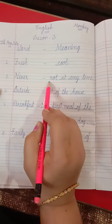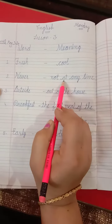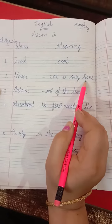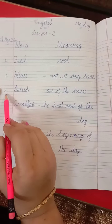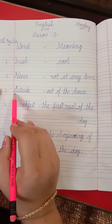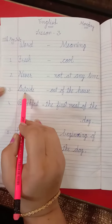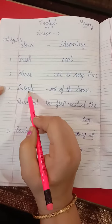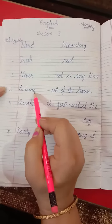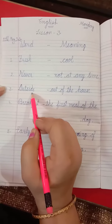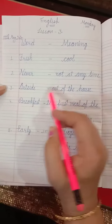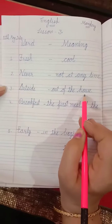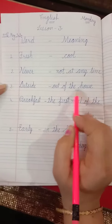Third is O-U-T-S-I-D-E. Outside. Outside means out of the house.